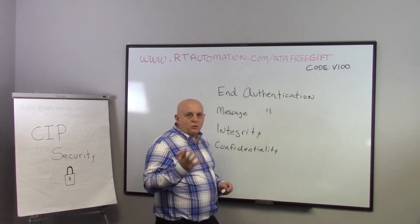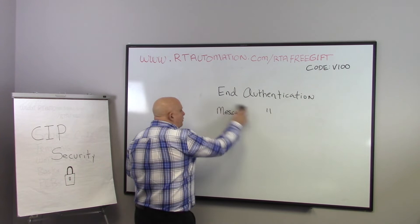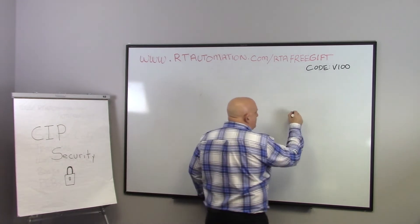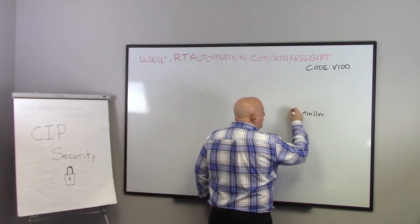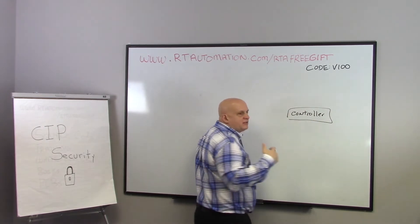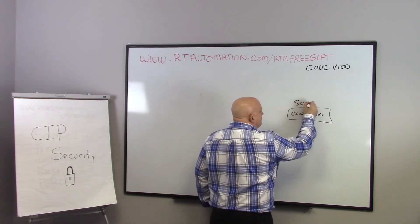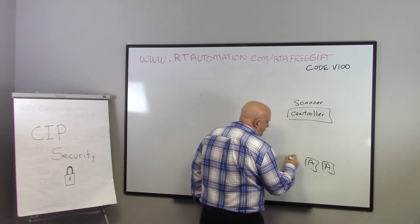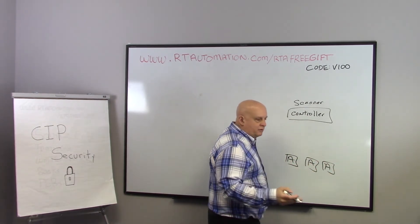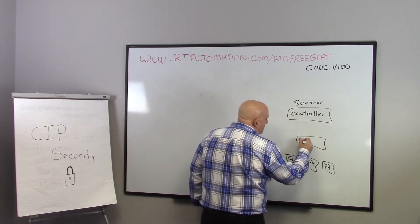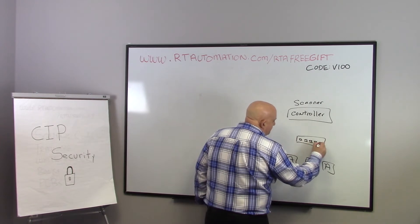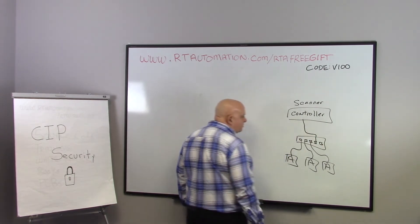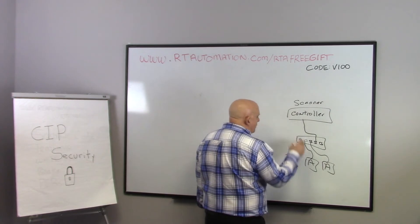So those are the four things we're trying to accomplish with SIP Security. Now, how does it do that? Let's do a quick review of EtherNet/IP. We've got a controller — we call the device making connections the scanner. Then we've got adapters: valves, drives, linear actuators, barcode readers, printers, all kinds of things. That stuff is all connected by a switch, controllers talk to the switch, and that's our EtherNet/IP network — adapters and scanners.